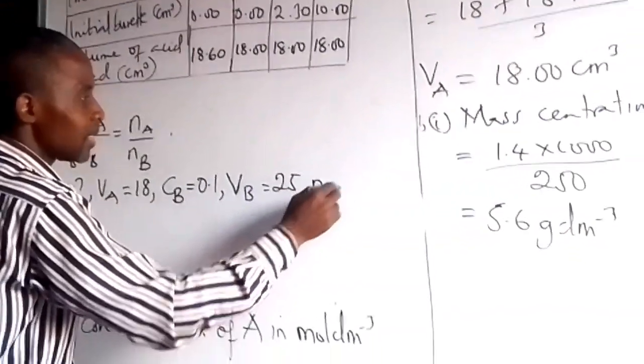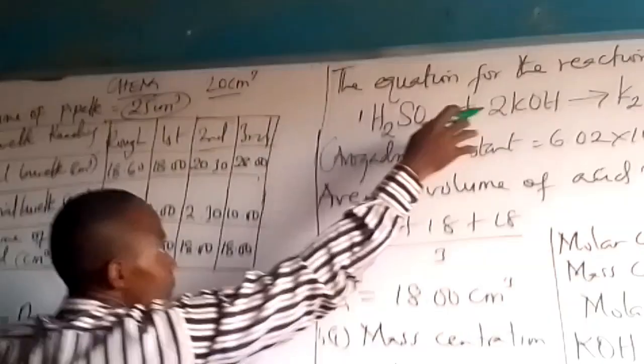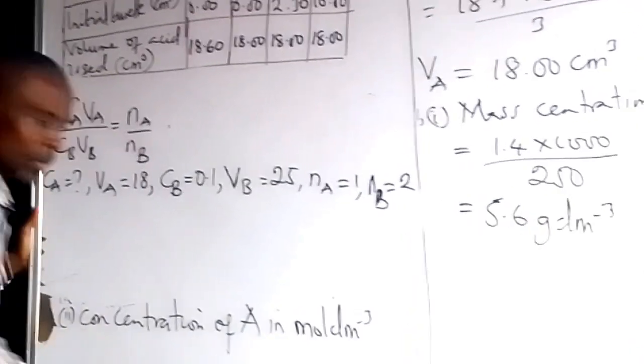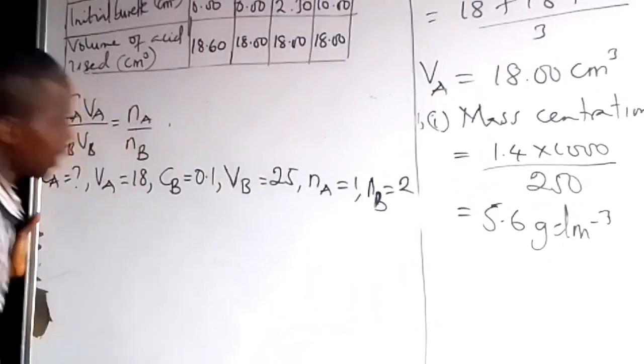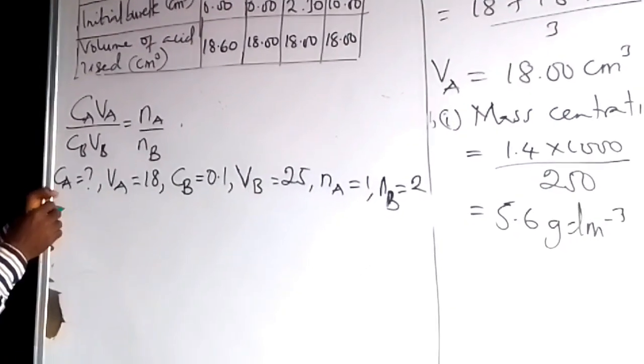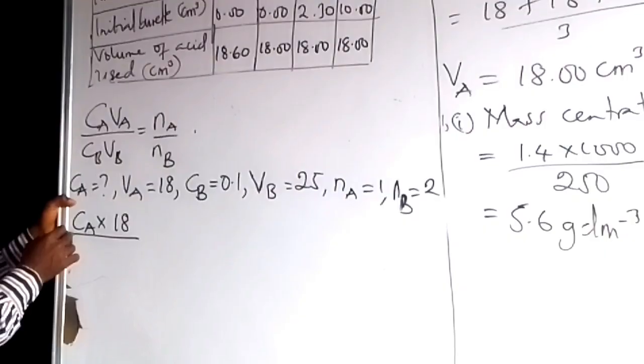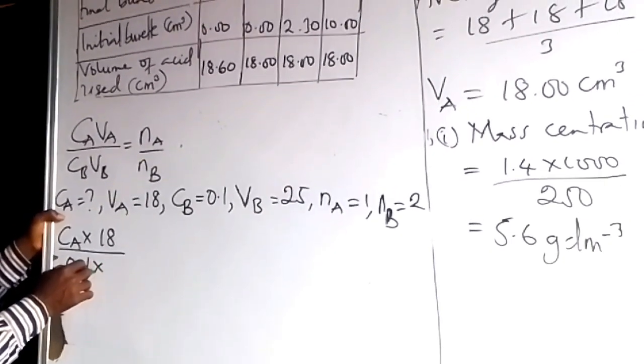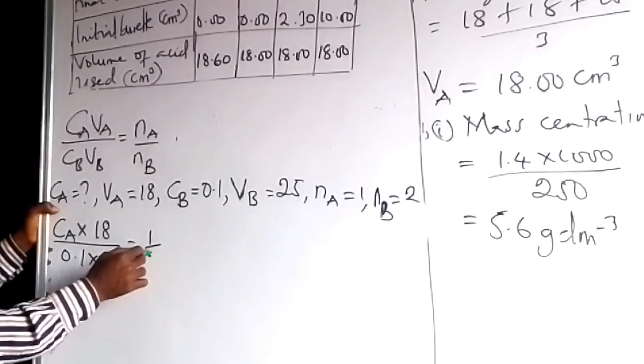So now we go to number of moles of acid. The acid is just 1. The number of moles of base is 2 moles of KOH. Number of moles of base is what? 2. So we are good to go now.